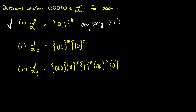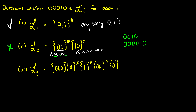The second language is (00)*(10)*. This means we can have any number of 00 pairs, followed by any number of 10 pairs. So can we get three zeros and then a one-zero? The answer is no — we cannot get three zeros out of the first part. The closest we can get is 0010 or 000010. We cannot get just three zeros with the second language, so the answer is no.